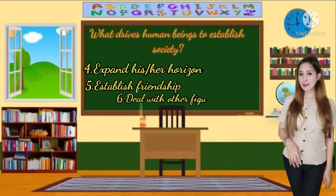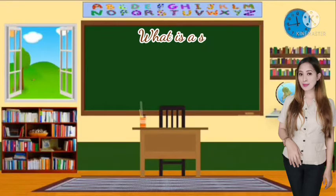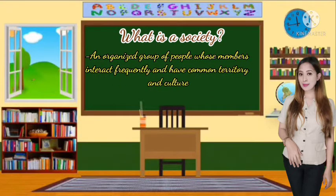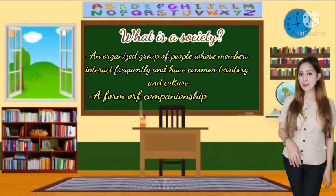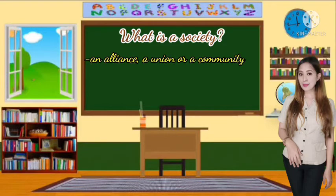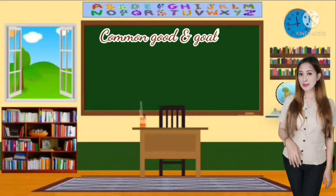Defining society: some may say a society is an organized group of people whose members interact frequently and have a common territory and culture. Or a society could be a form of companionship or friendly association with others. To some, it's an alliance, a union, or a community. And to others, humans influence society through actions, and it provides opportunities to further growth in coming years.